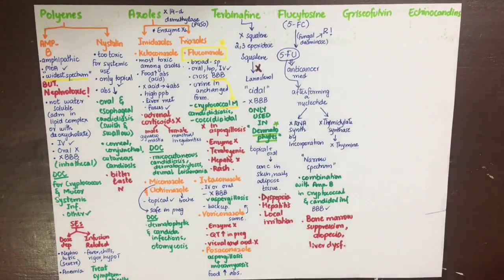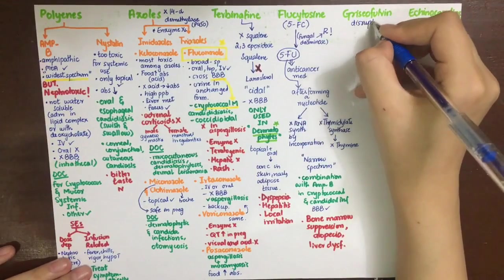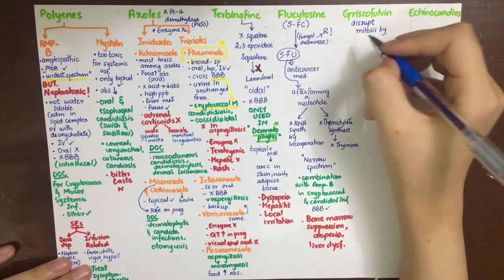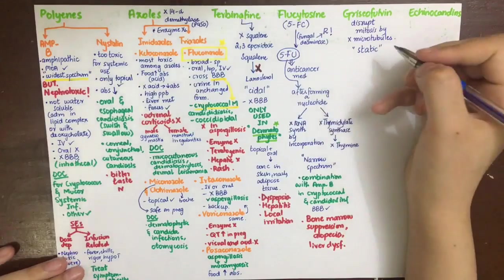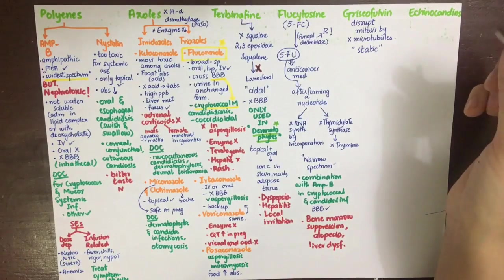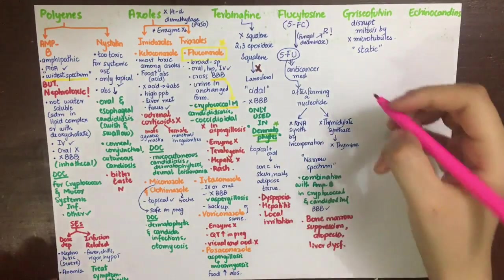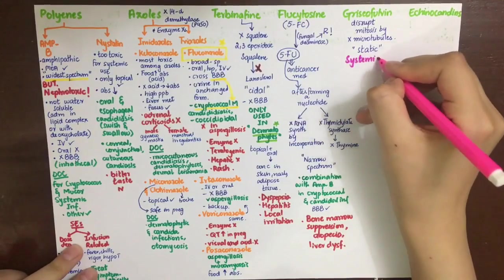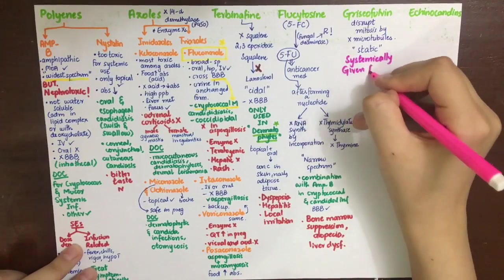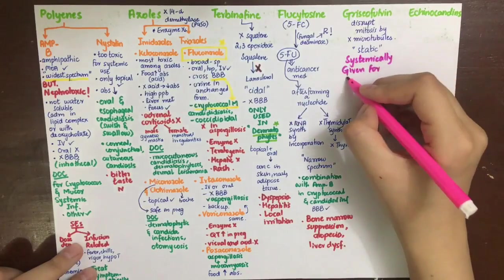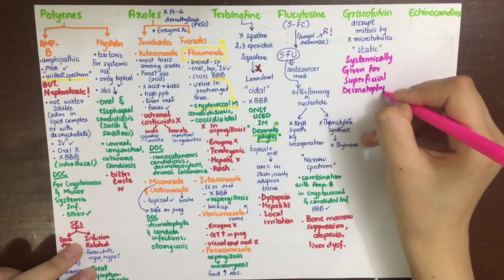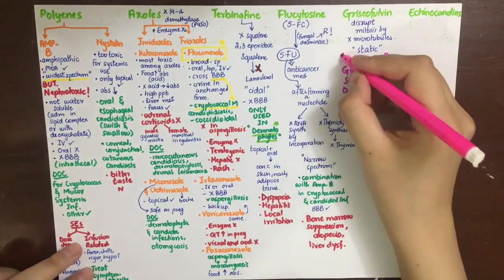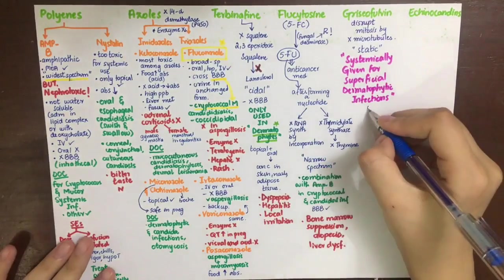The next drug is griseofulvin, which acts by disrupting the microtubules of fungal cells and thus will inhibit mitosis of the fungal cell. That is why it is a static drug. This is a drug used systemically for a superficial infection. This infection is in the skin or a superficial area, but the drug is given systemically orally. Why is that? Because griseofulvin has an ability to reach high concentrations in keratin-containing tissues such as nails, hair, and skin where it is needed.